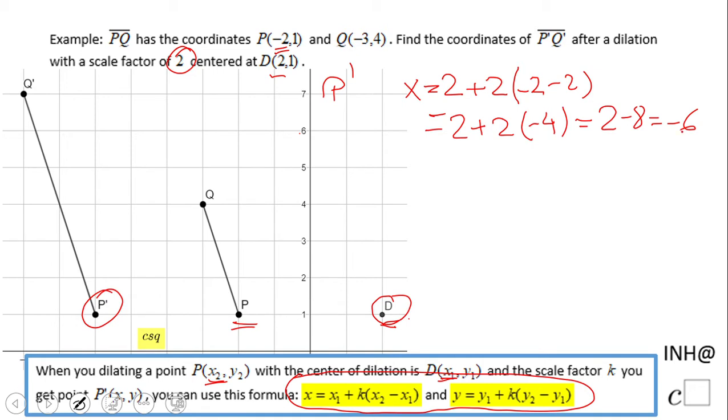What do we get? We have 2 + 2(-2 - 2), which is 2 + 2(-4), which is 2 - 8, which equals -6. Let's check: does this look like -6 on our graph? Yes, 1, 2, 3, 4, 5, 6—this is -6.